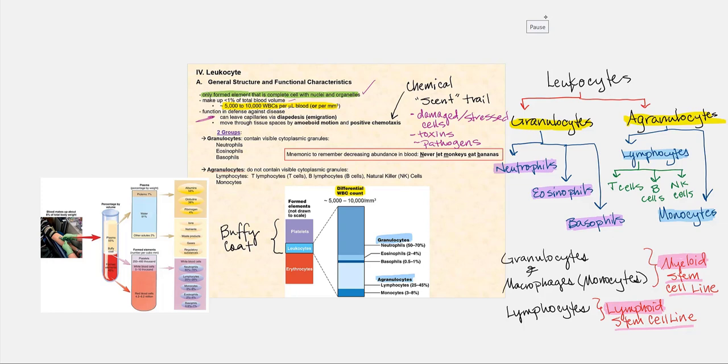There are two main groups of leukocytes: the granulocytes and the agranulocytes. Granulocytes have visible cytoplasmic granules that absorb dye or stain when we stain our blood, because these granules are quite dense, making them visible under the microscope. With agranulocytes, their cytoplasmic granules aren't as dense, so they don't absorb as much stain and are not visible under the microscope — hence the name agranulocytes.